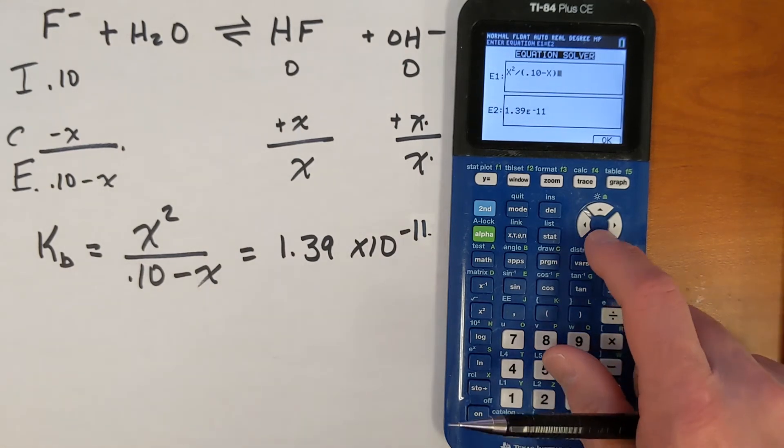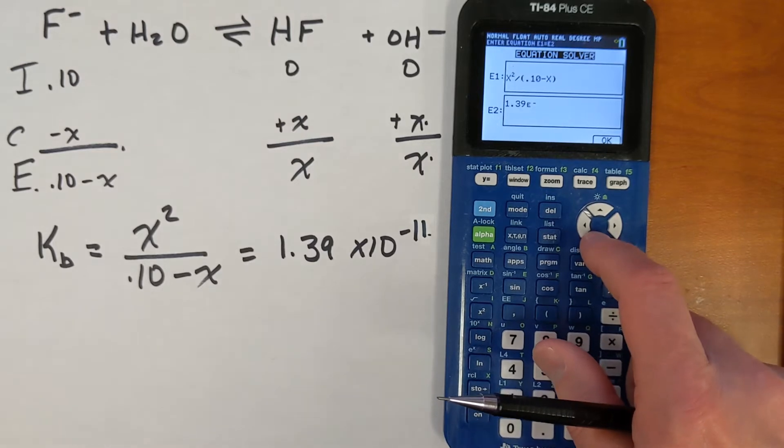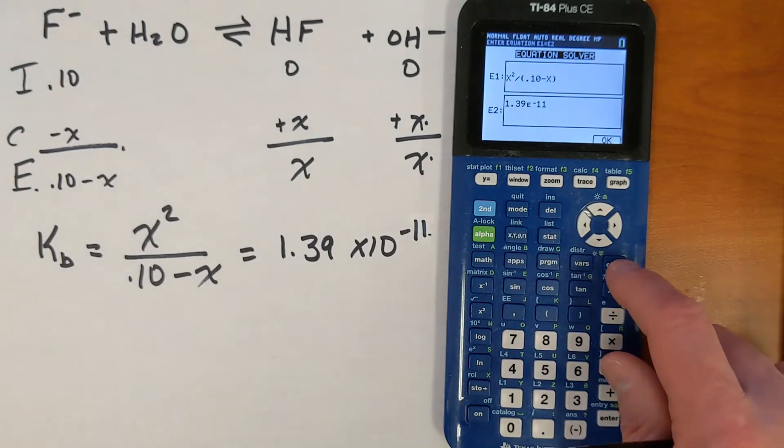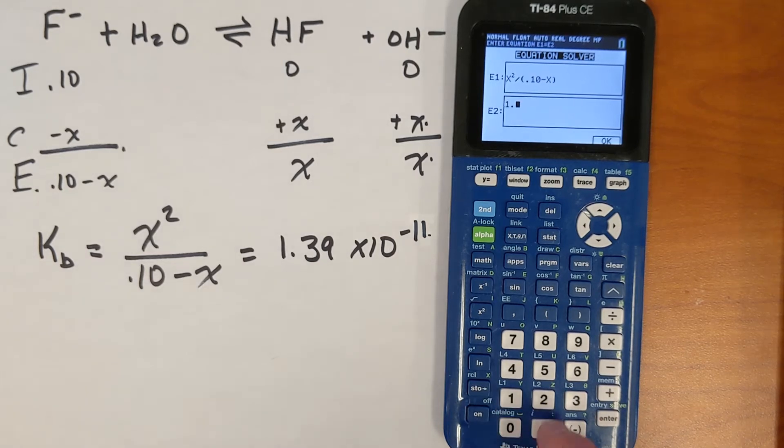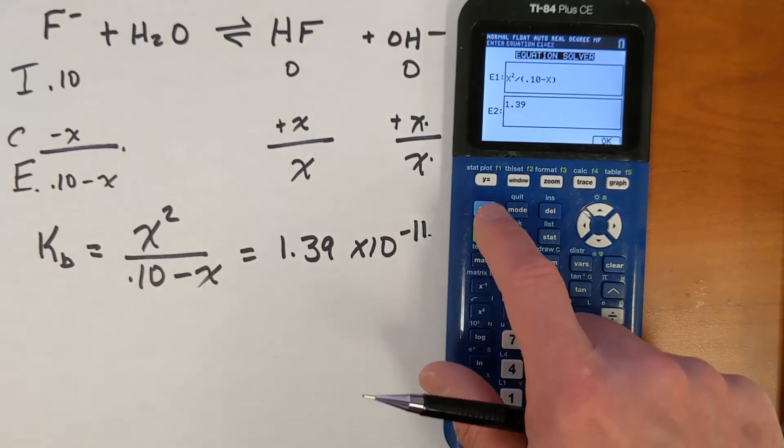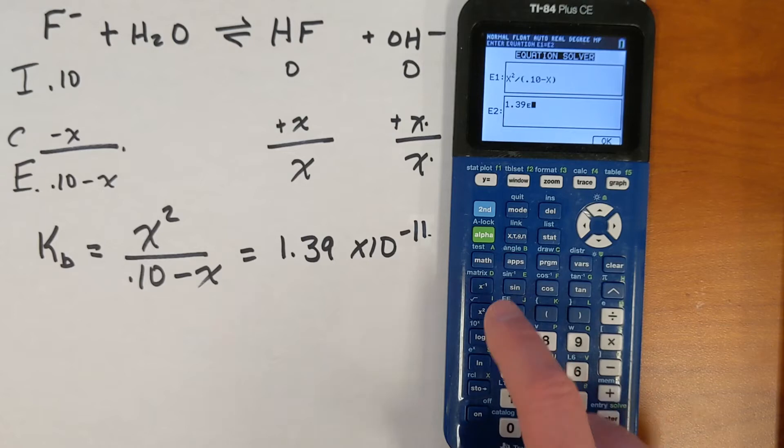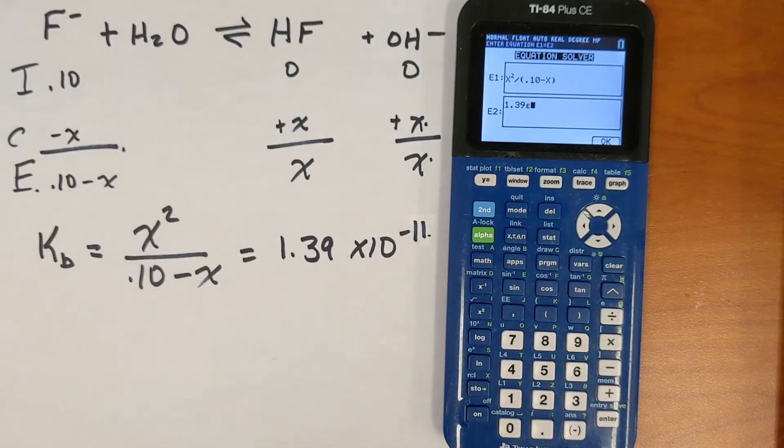My right-hand side equation, after you type this in, you can enter a number down here. So if I want to retype that number, just press clear, 1.39. I like to use the E button here rather than the times 10 to that because it burned me many times in the past.